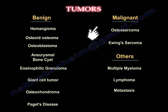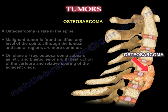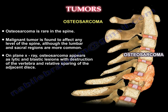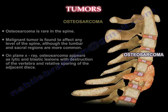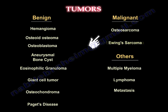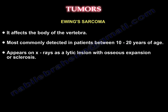Now we go to malignant tumors, which are not very common. Osteosarcoma is very rare. It can be seen predominantly in the lumbar and sacral region but can be found in the cervical spine. The X-ray will show lytic and blastic lesions with destruction of the vertebra and sparing of the discs. It affects young patients between 10 to 20 years. The X-ray will show a lytic lesion with osseous expansion or sclerosis.